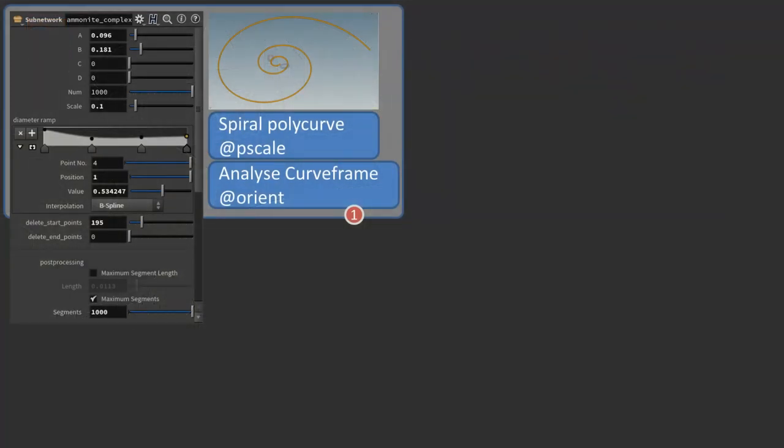This is the interface to set the parameters for the curve generation. The points making up the curve will get two attributes, p-scale and orient. Remember, I will come back to this in much more detail later, so don't worry too much as this is a quick overview of the setup.